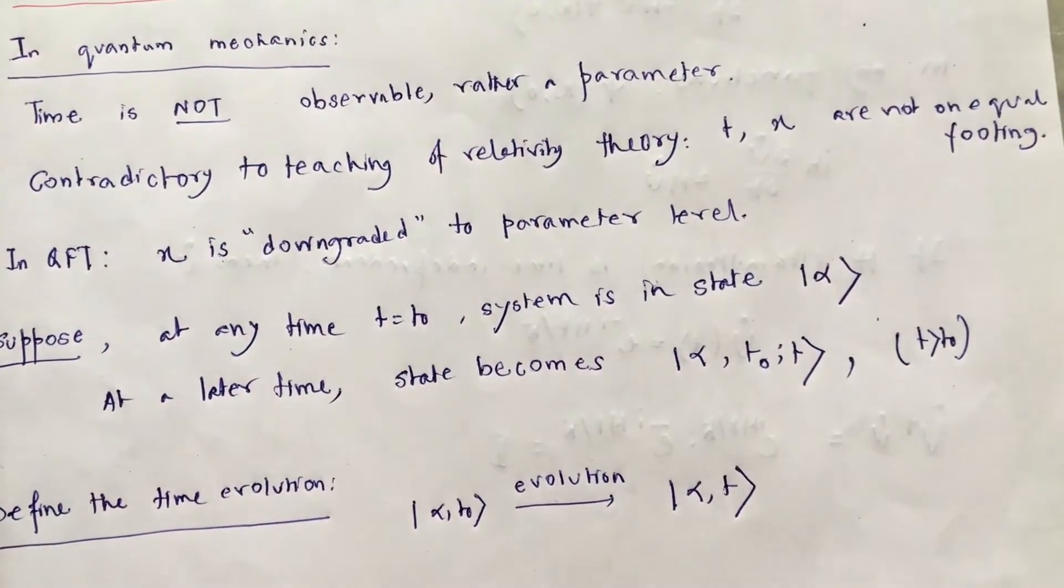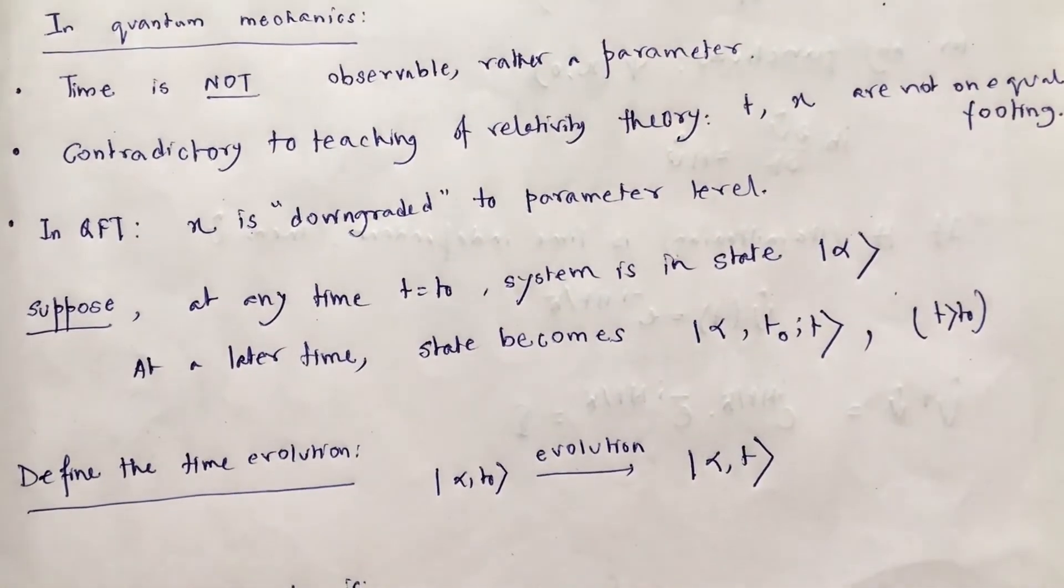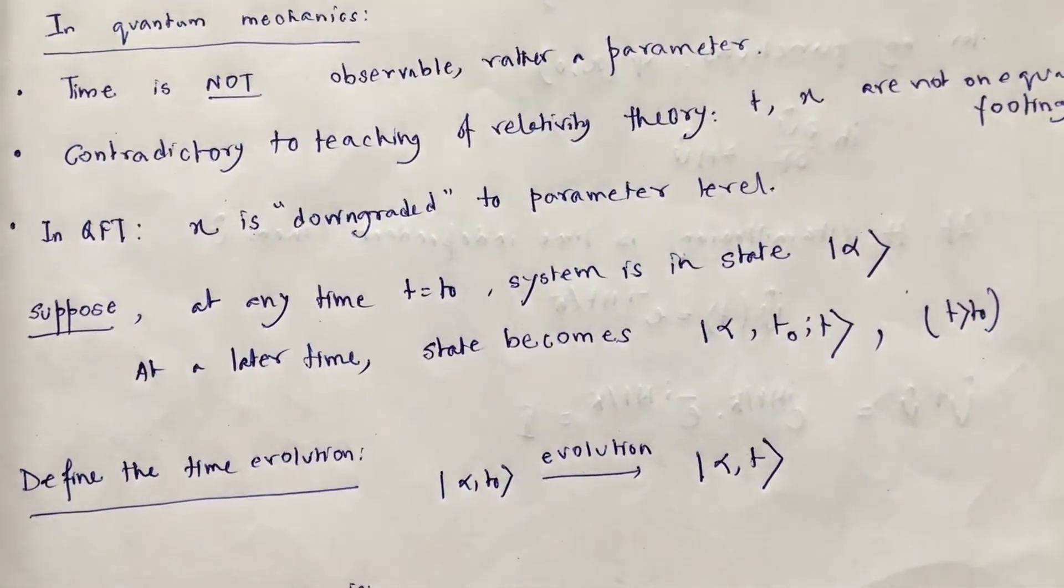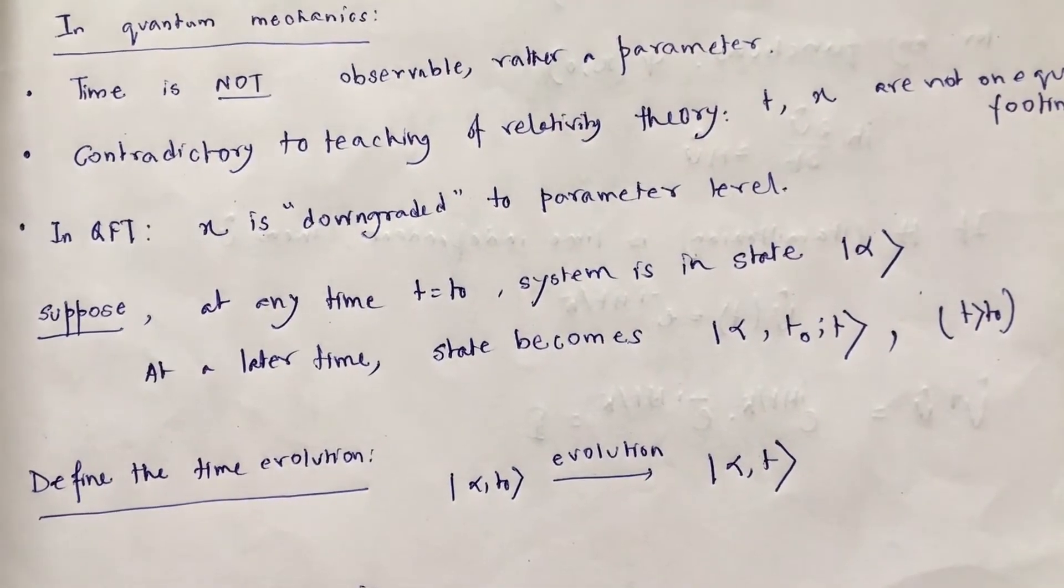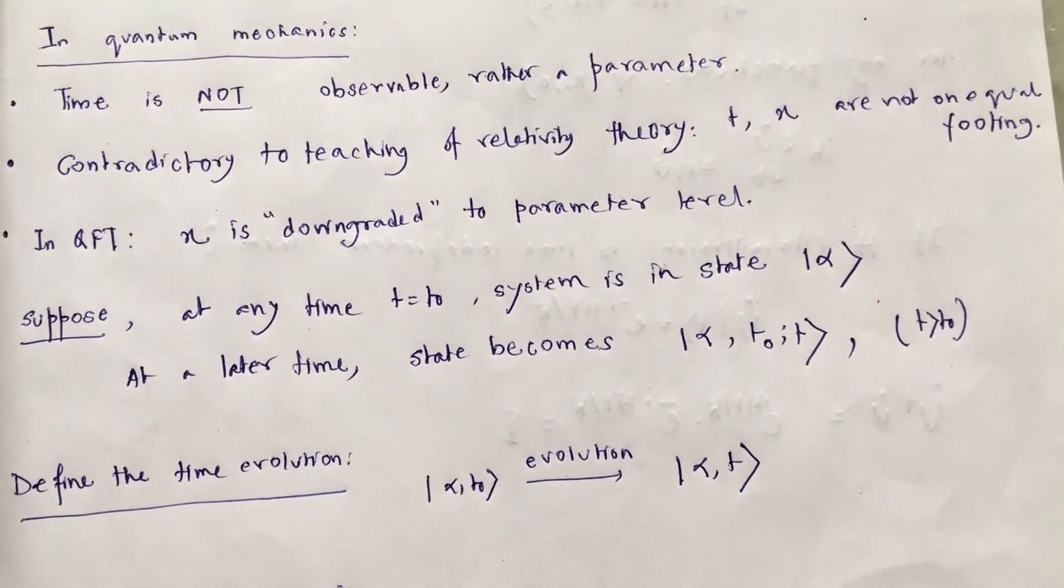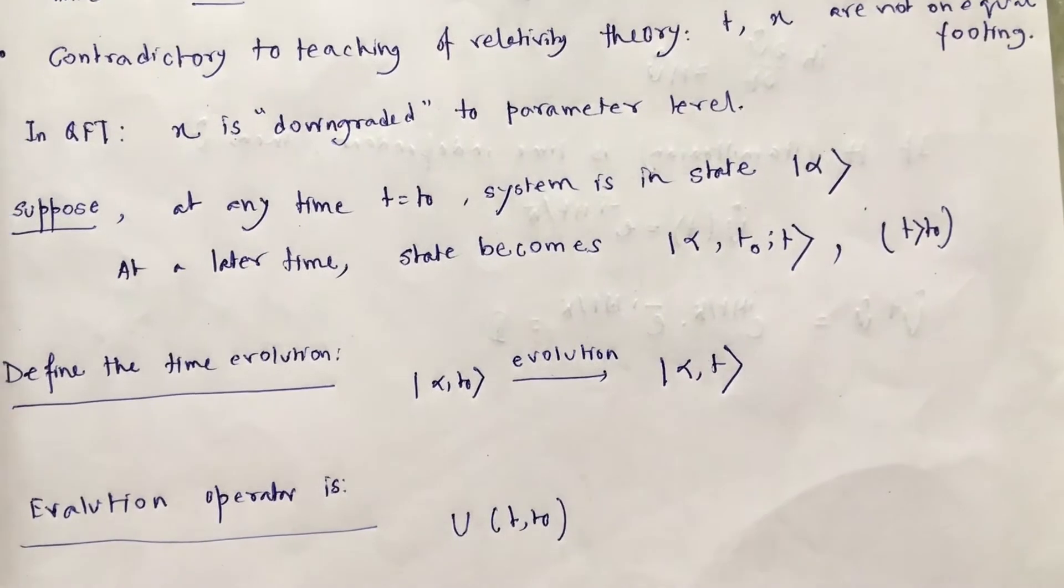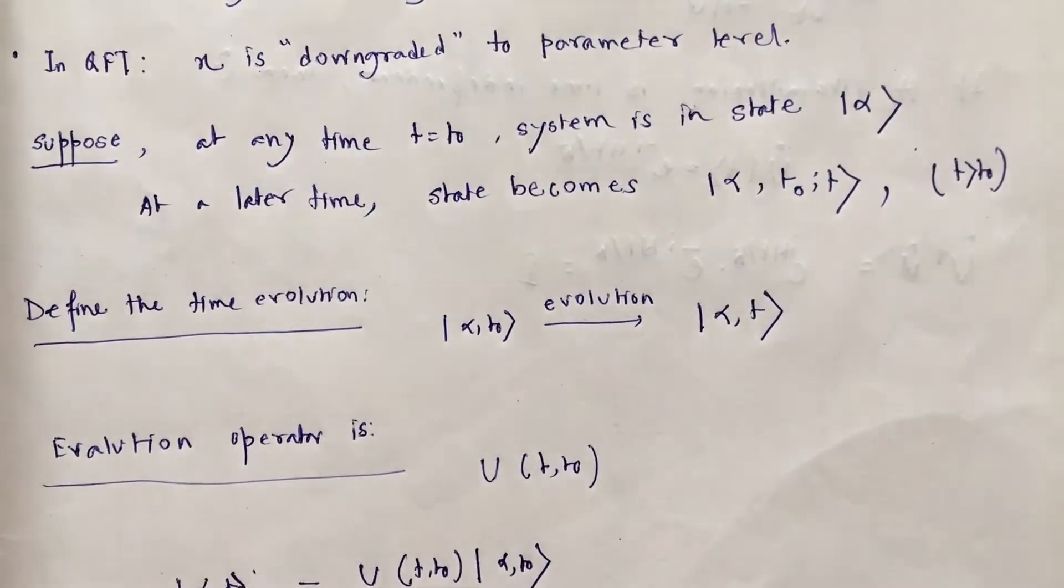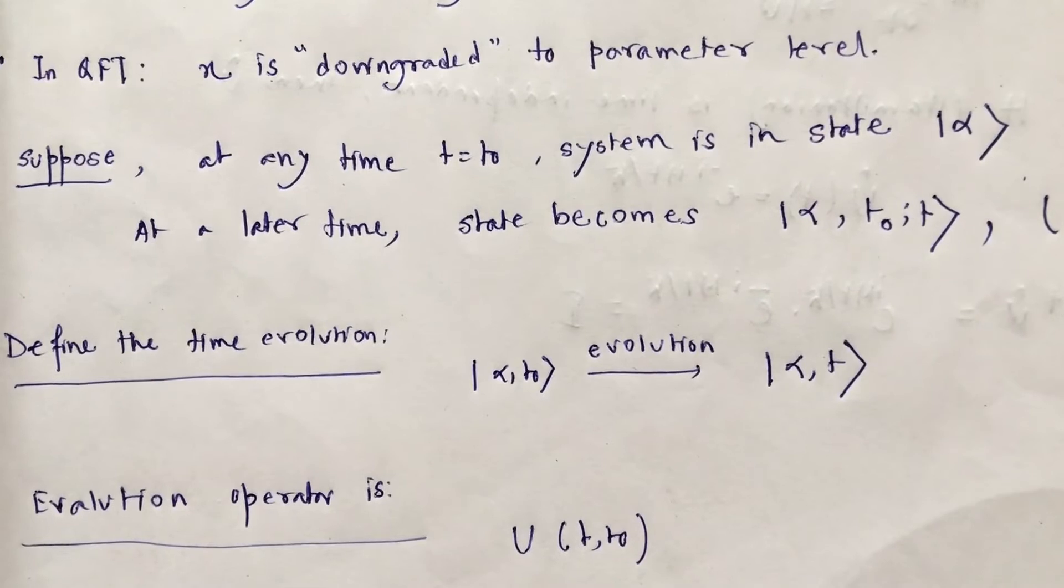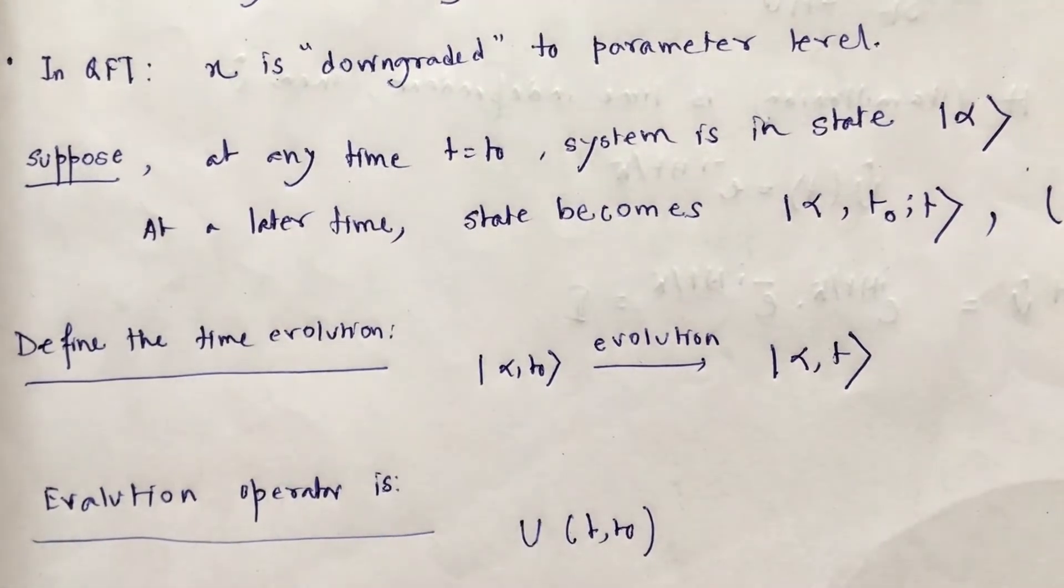Now, there is a quick introduction of how we treat time in quantum mechanics. It's not an observable. It's rather a parameter in quantum mechanics. It is not an observable means it is not like position or momentum. So we cannot associate any Hermitian operator with the time. In relativity theory, space and time were treated on equal footing. But in relativistic quantum field theory, the position is downgraded to the parameter level. And then it is treated on equal footing with the time, because time is a parameter.